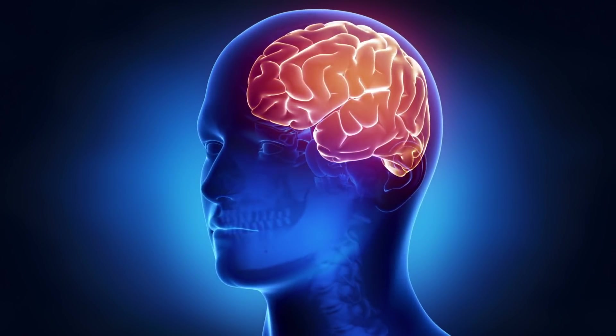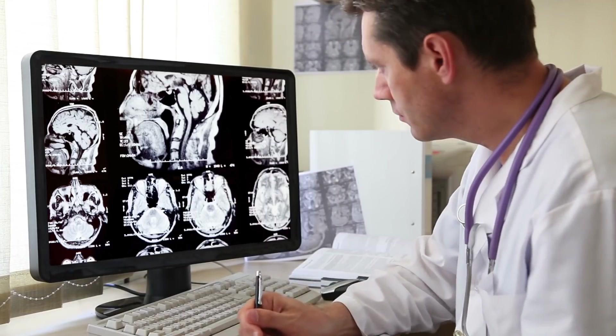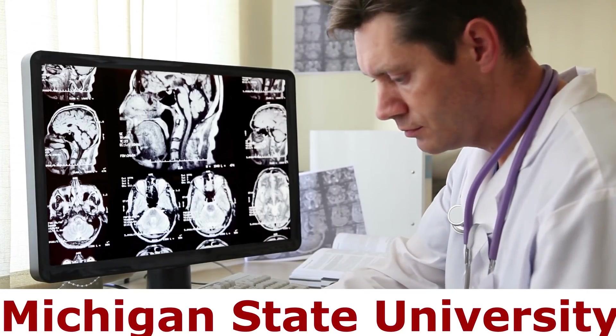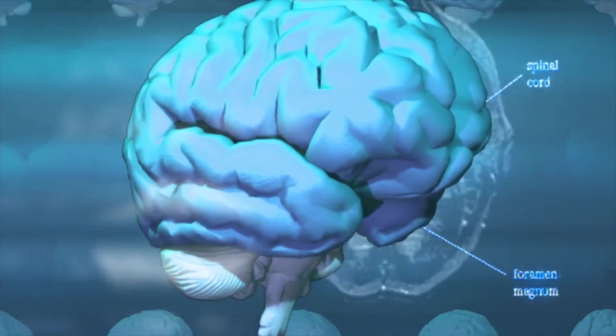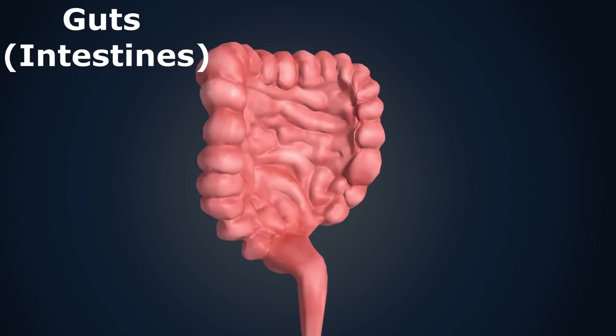If I ask you how many brains do you have, most of you would think why I am asking such silly questions. But according to researchers at Michigan State University, we have a second brain in our body and it is present in our guts.